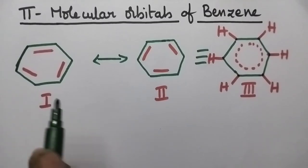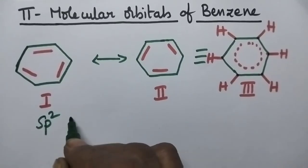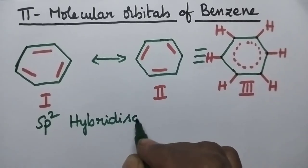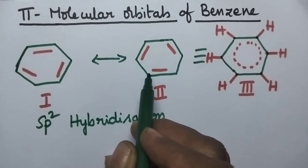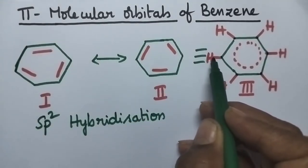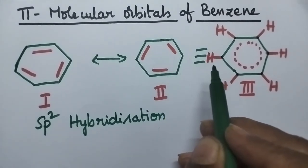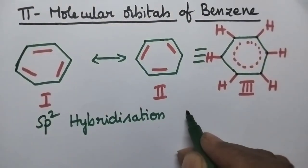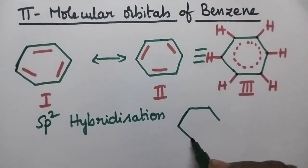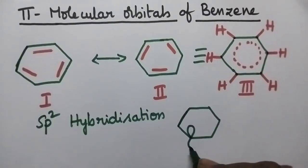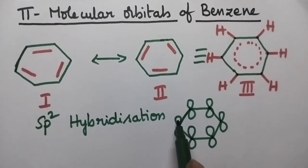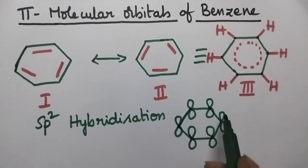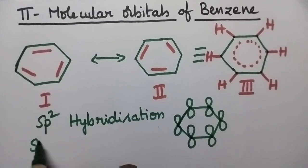Each carbon atom in benzene molecule undergoes sp2 hybridization. The 2 valencies of each carbon atom are satisfied by the adjacent carbon atoms. The third valency is satisfied by the hydrogen atom, and each carbon atom consists of a P orbital. Each carbon atom of benzene molecule contributes a P orbital for pi system formation, resulting in the formation of 6 molecular orbitals.